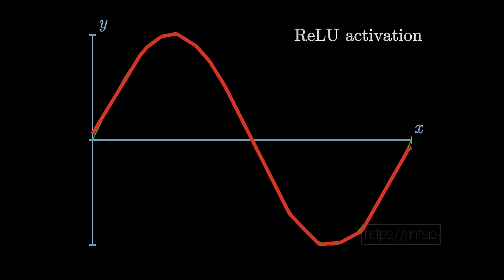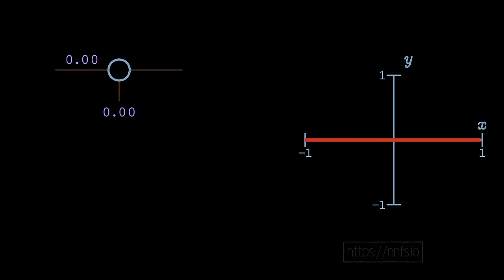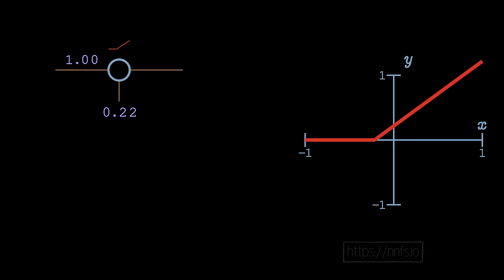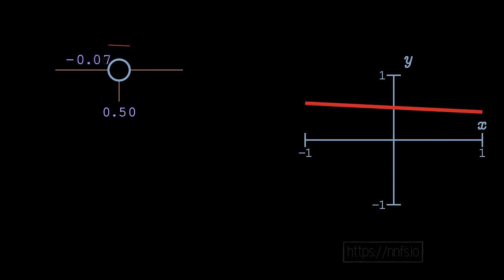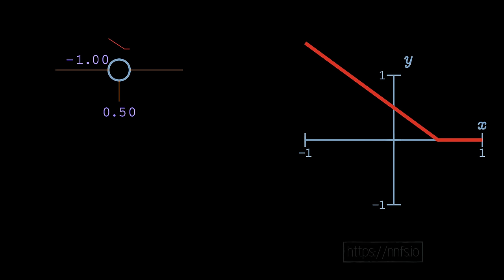Starting with a single neuron using ReLU: we can strengthen output by increasing the weight, and we can offset the activation point by tweaking the bias — moving the function horizontally. If we negate the weight, it flips the ReLU from determining when the input activates to determining when it deactivates. These are relatively expected outputs from a single neuron with a ReLU activation function.